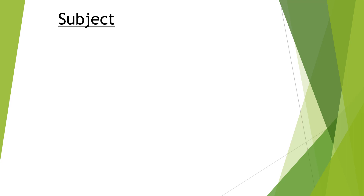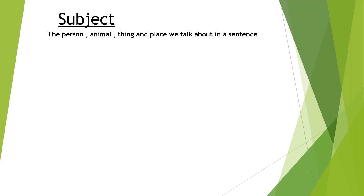The first word I'm going to revise with all of you today is the word 'subject'. Can you read the word 'subject' three times? What is the meaning of subject? Subject means the person, animal, thing, and place we talk about in a sentence. For example, Peter is a person, the tiger is an animal, the pencil is a thing, and Nibong Tebal is a place.